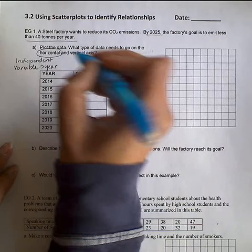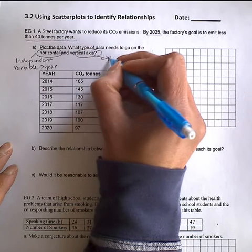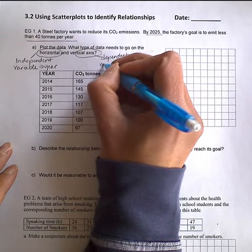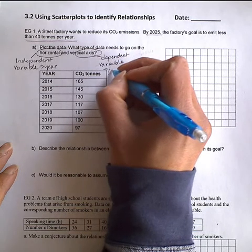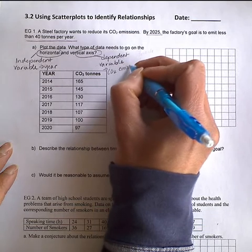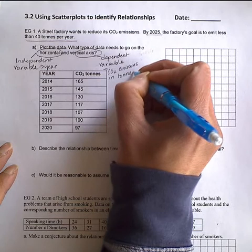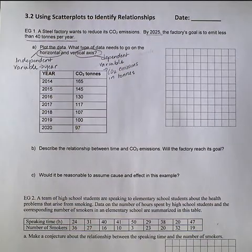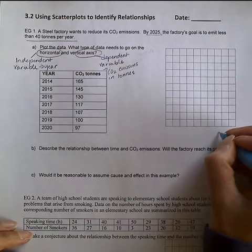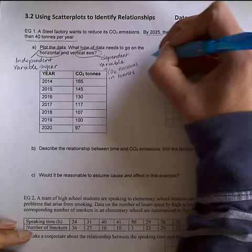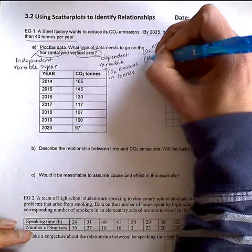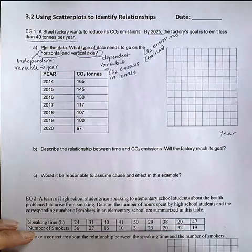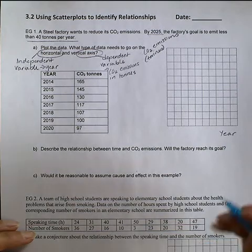The vertical axis needs to have our dependent variable. And in this example, the dependent variable will be the carbon dioxide emissions in tons. Okay, I'd like you to pause the video. You are going to plot your year on the x-axis and your CO2 emissions in tons on the y-axis. Actually, before you do that, let me just get you started on a suitable scale.